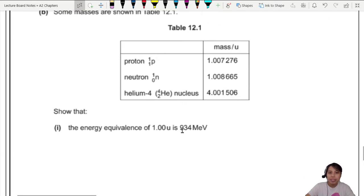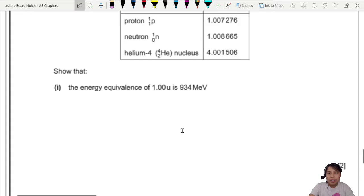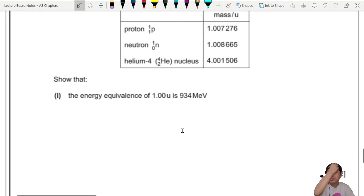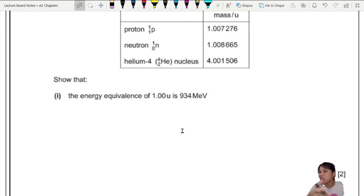Okay, it comes to the table. Let's do the table. Some masses are shown in table 12.1. Show that the energy equivalence of 1u is 934 MeV. Oh, this one we got a proof. How do you convert mass to energy? The main energy equation you want to use is E equals mc squared. So we got to plug in everything. So this one, you need to convert to kg.